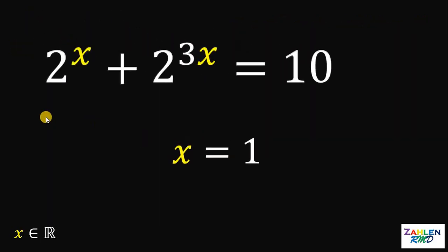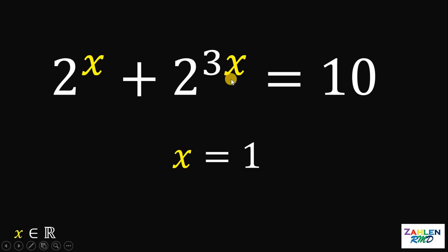Therefore, given this equation 2 raised to x plus 2 raised to 3x equals 10, then the only real value for x must be equal to 1. And as always, we are done.